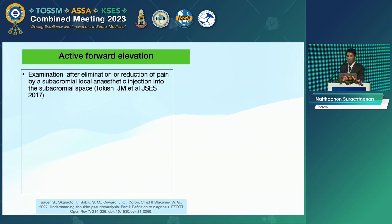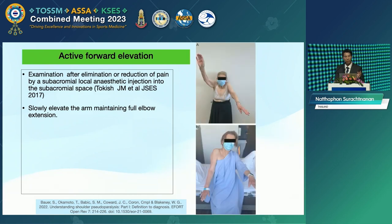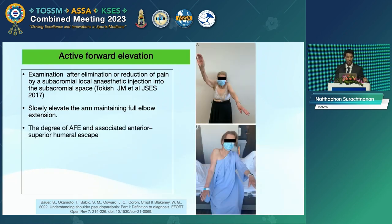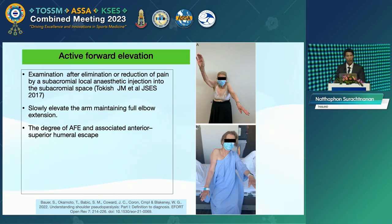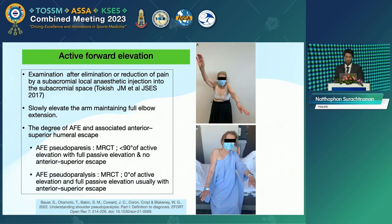For the active forward elevation test, we need to reduce pain before the test by injection of local anesthesia in the subacromial space. Then slowly elevate the arm with full elbow extension. This paper divides the degree of active forward elevation and associates it with anterior superior humeral head escape.